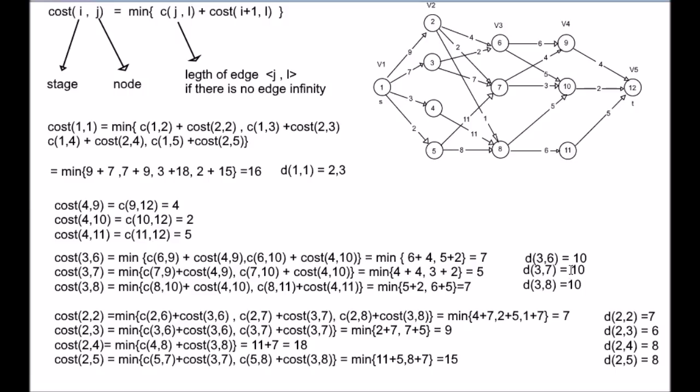Calculate for the remaining vertices of different stages. Now, for calculating the path, let us consider from (1,1), we can either take 2 or 3, which is giving the same value. So from 1, let us consider 2. From 2, that is cost of D(2,2), we took 7. From 7, that is D(3,7), 10. From 10, we reached the destination 12.